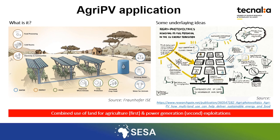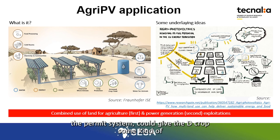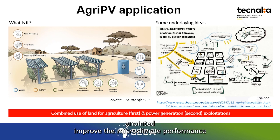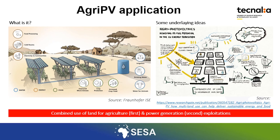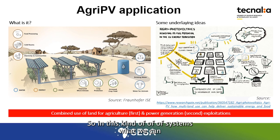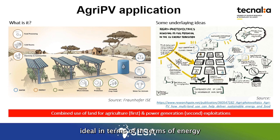This way, in a kind of symbiosis, the PV system could give the crop some kind of improved microclimate performance. The crop could be protected from extreme conditions such as high radiation seasons, heavy storms, and heavy precipitation. So in this kind of system, what we can obtain is a high yield in terms of both energy and agricultural production.